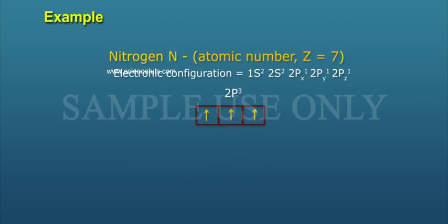Nitrogen N, atomic number Z equals 7. Electronic configuration equals 1s² 2s² 2px¹ 2py¹ 2pz¹. The seventh electron enters the 2pz orbital.